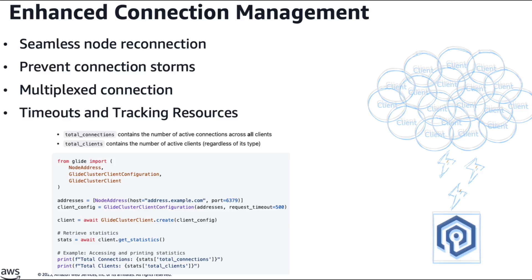Another important problem customers face is connection management, which in a distributed system presents unique challenges that impact performance, reliability, and resource utilization. Glide addresses these with solutions like proactive reconnection: a background monitoring system detects disconnections and initiates reconnections preemptively, eliminating the reconnection latency typically experienced when a request discovers a broken connection. Glide also prevents connection storms through a back-off algorithm with jitter that distributes reconnection attempts over time, protecting servers from connection surges. Additionally, Glide introduces multiplex connections — rather than maintaining a connection pool, Glide establishes a single multiplex connection per cluster node, minimizing total TCP connections, reducing system call overhead, and maintaining high throughput through efficient connection pipelining.